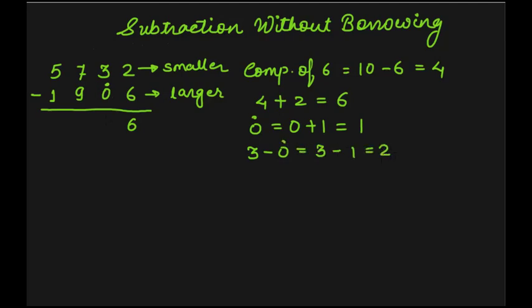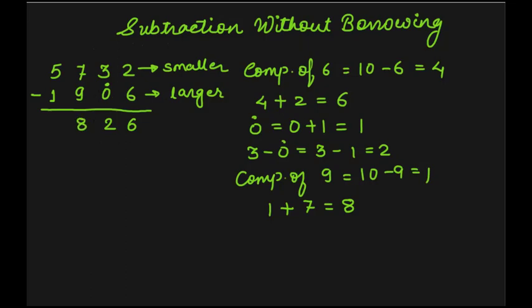Let's move on to the hundreds place column, where 7 is the upper digit and 9 is the lower digit. As we cannot subtract 9 from 7, we will find the complement of 9, which is 1. Then we will add 1 to the upper digit at the hundreds place: 1 plus 7 equals 8. We write 8 and make a carry over 1. It becomes dotted 1, and its value is equal to 1 plus 1, which gives 2.